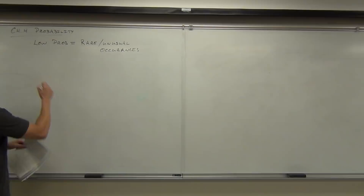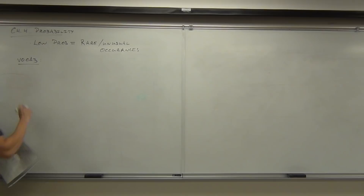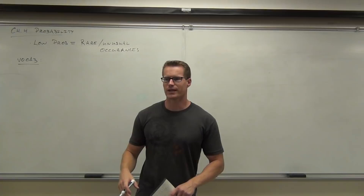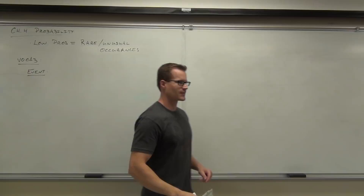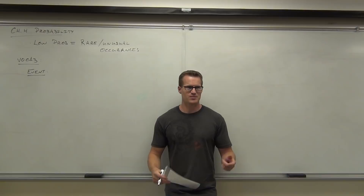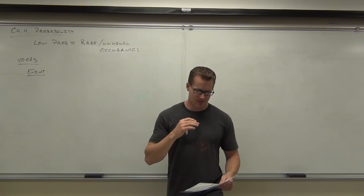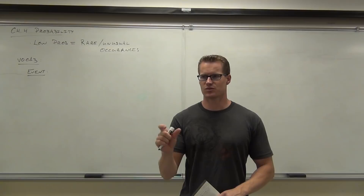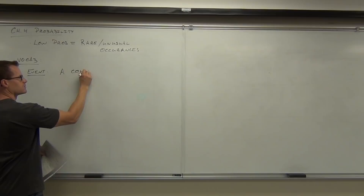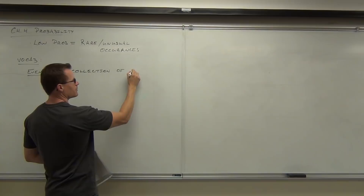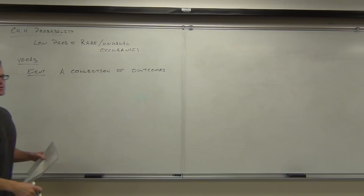There's some vocabulary we need to talk about before we get going on exactly what probability is going to be in relation to this class. The first word we need to talk about is called an event. Event in statistics doesn't mean event like in English — in English, an event means you're having a party or something. Here, that's not what it means. An event for us is a collection of outcomes of a procedure — it's what you get from a procedure.